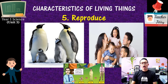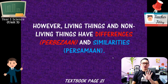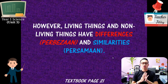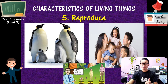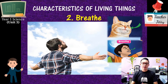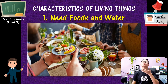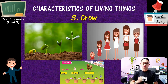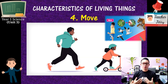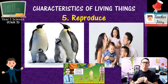To recap: there are five characteristics to identify living things. The first is we need food and water. The second is we breathe. The third is we grow. The fourth is we move. The fifth is we reproduce.